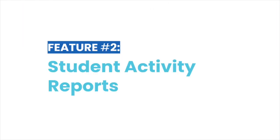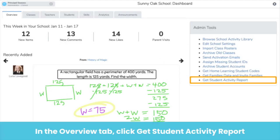The next feature is the Student Activity Report. This feature is located in the Admin Tools section — definitely not to be overlooked. You can follow along and pull your own Student Activity Report right now. We will click back to the Overview tab on the right side under Admin Tools. At the bottom, you will see "Get Student Activity Report" — please click that.